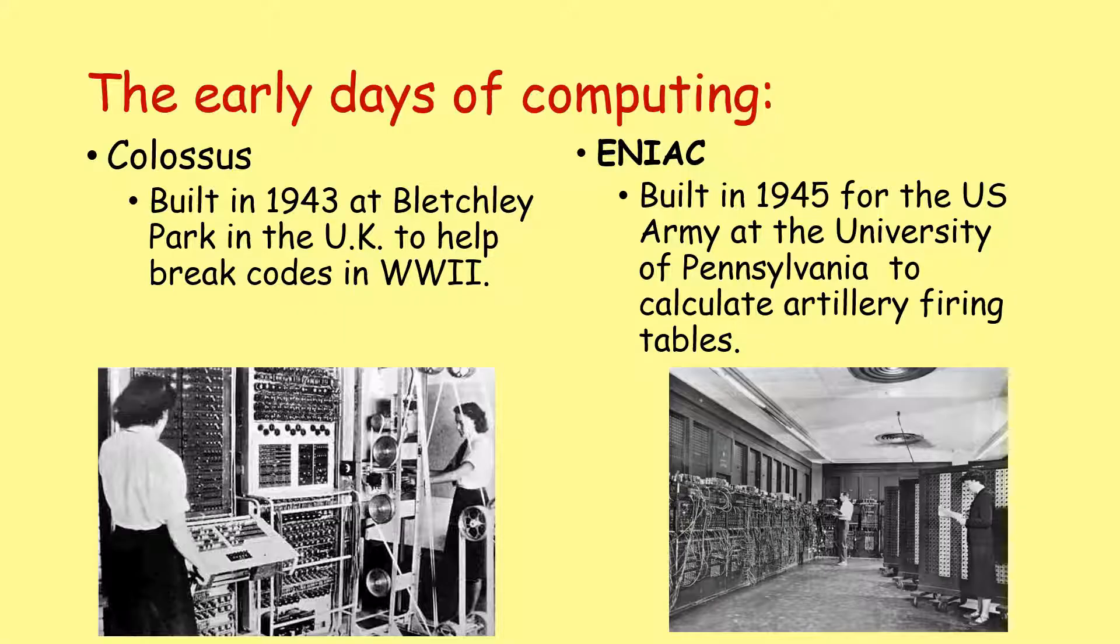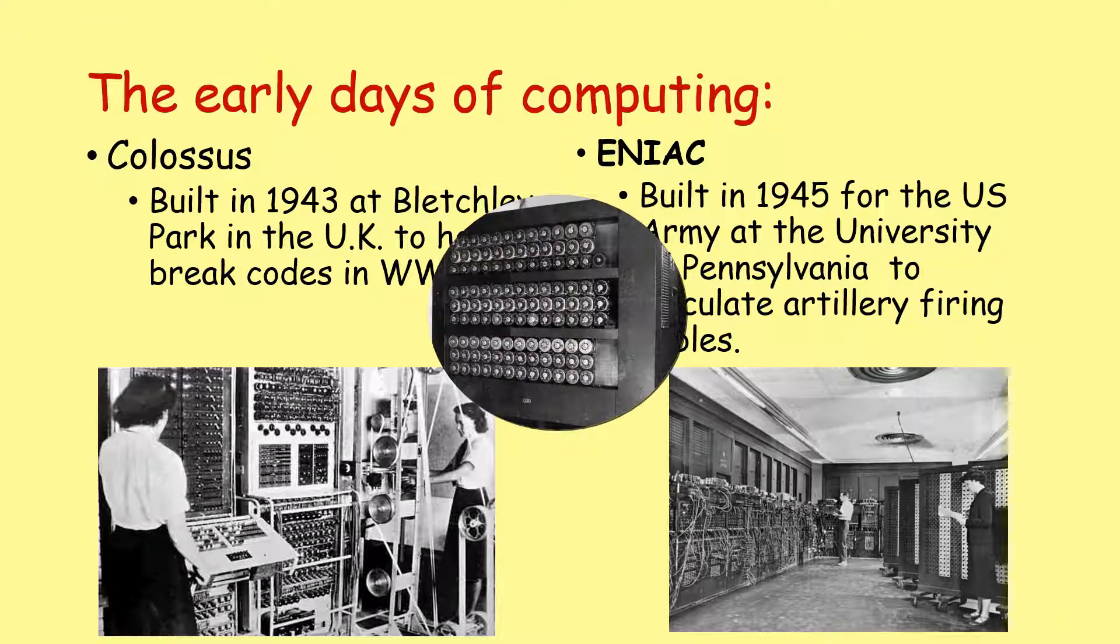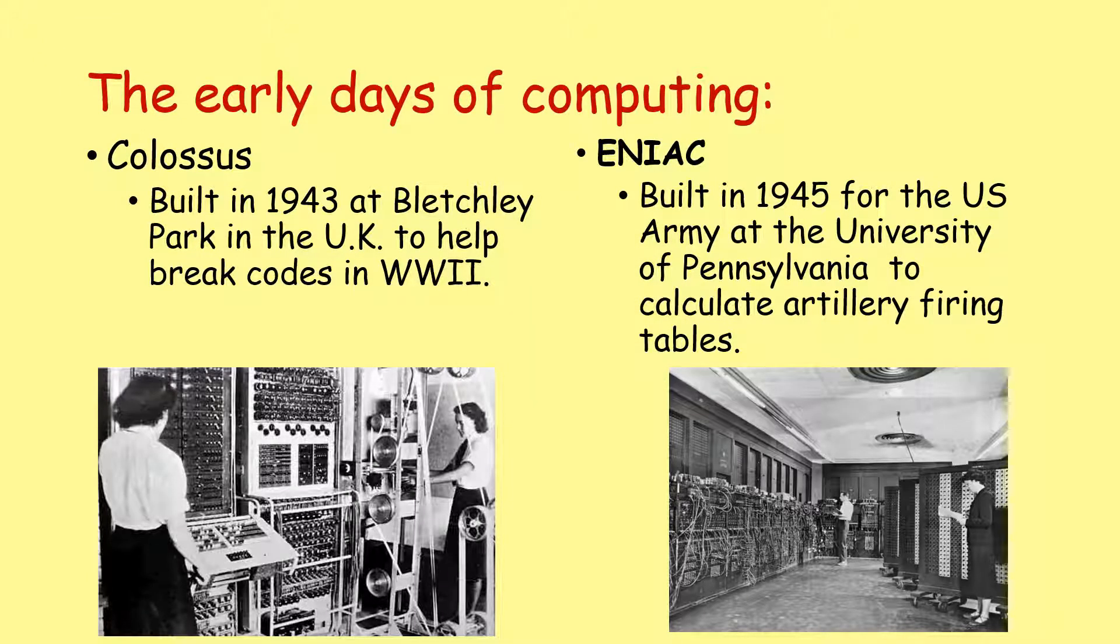Let's flash back to the early days of computing. We've got the Colossus, built in 1943 at Bletchley Park in the UK to help break codes in World War II by Tommy Flowers. Then the Americans built the ENIAC in 1945 at the University of Pennsylvania for the US Army, used to calculate artillery firing tables for wartime. Both very expensive early computer devices really revolutionized the field.